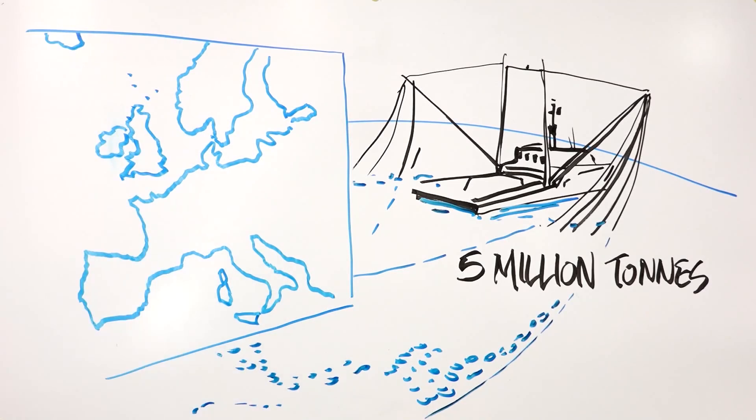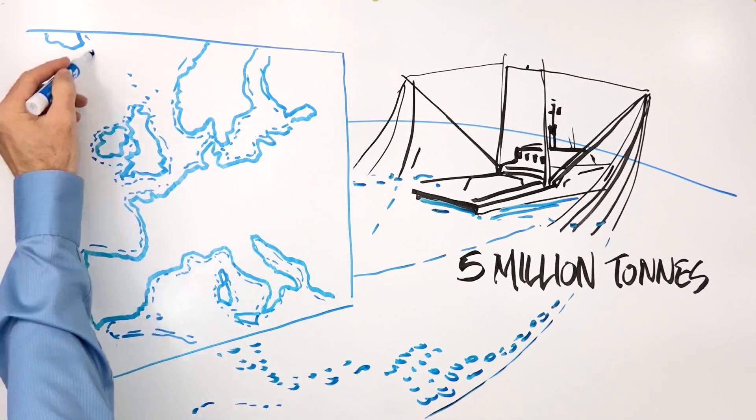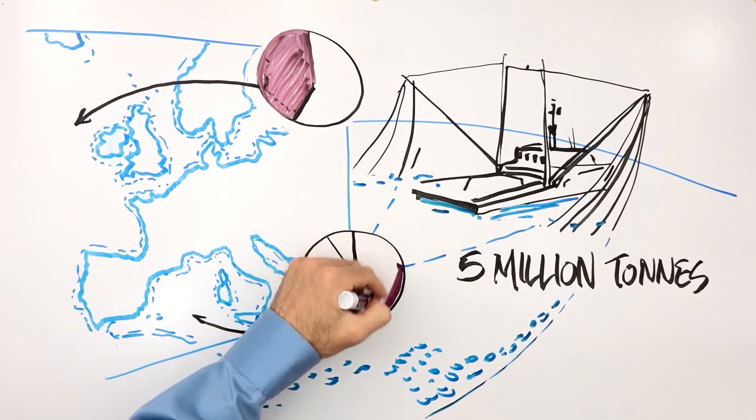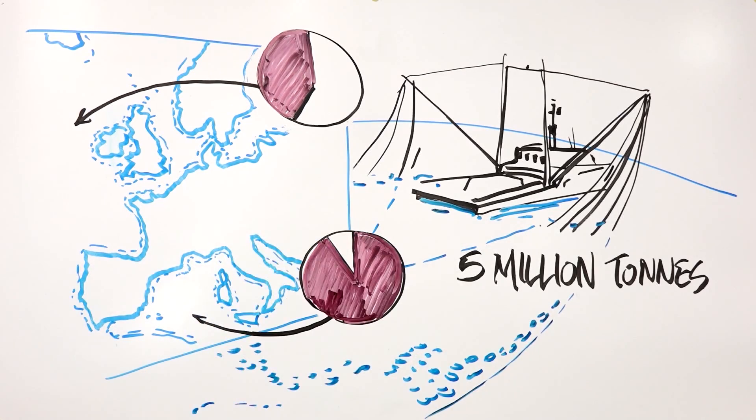The latest data show that in the North Sea and Northeast Atlantic, nearly 50% of stocks are overfished. And the situation is even more alarming in the Mediterranean Sea, where more than 90% of stocks are overfished.